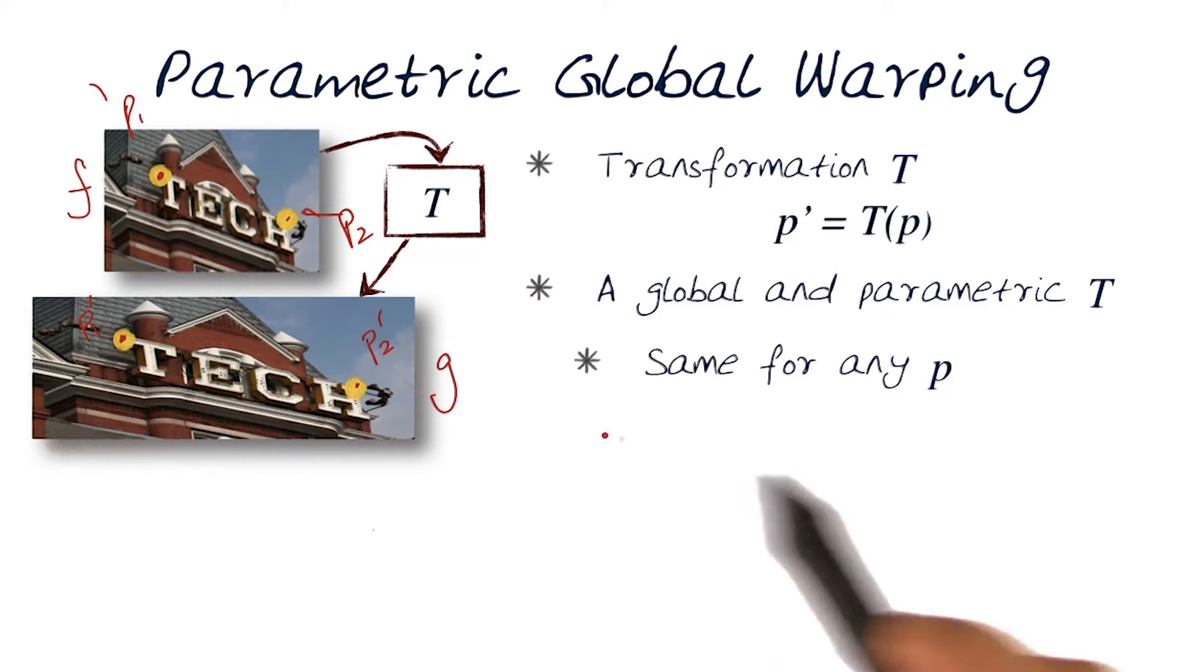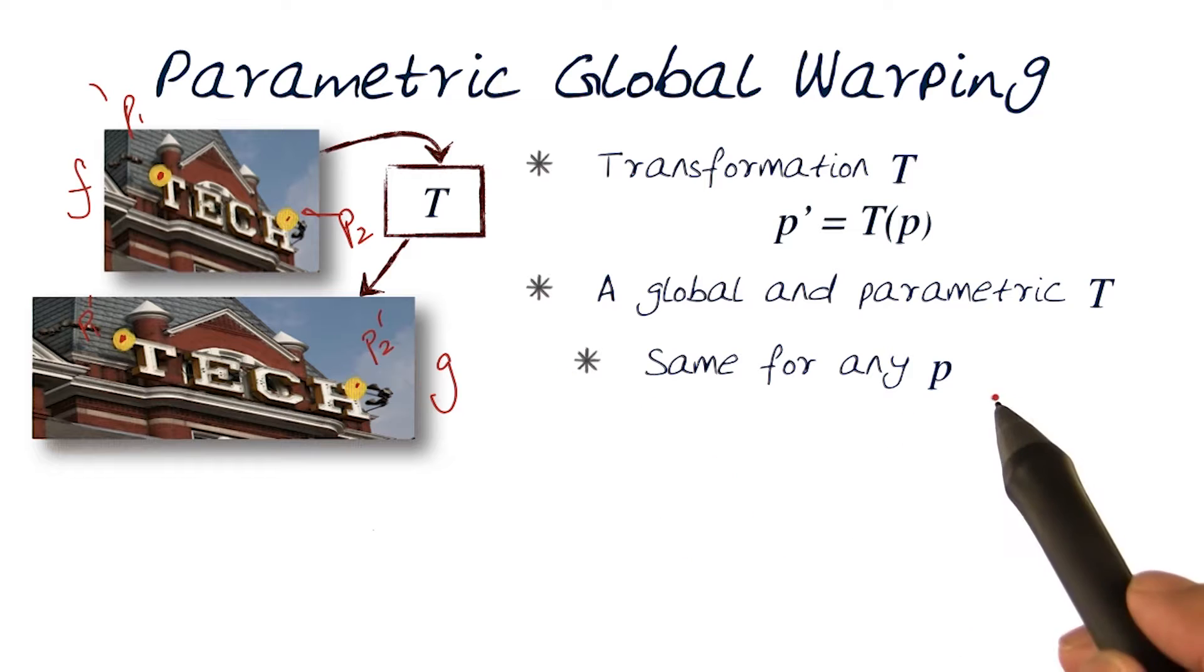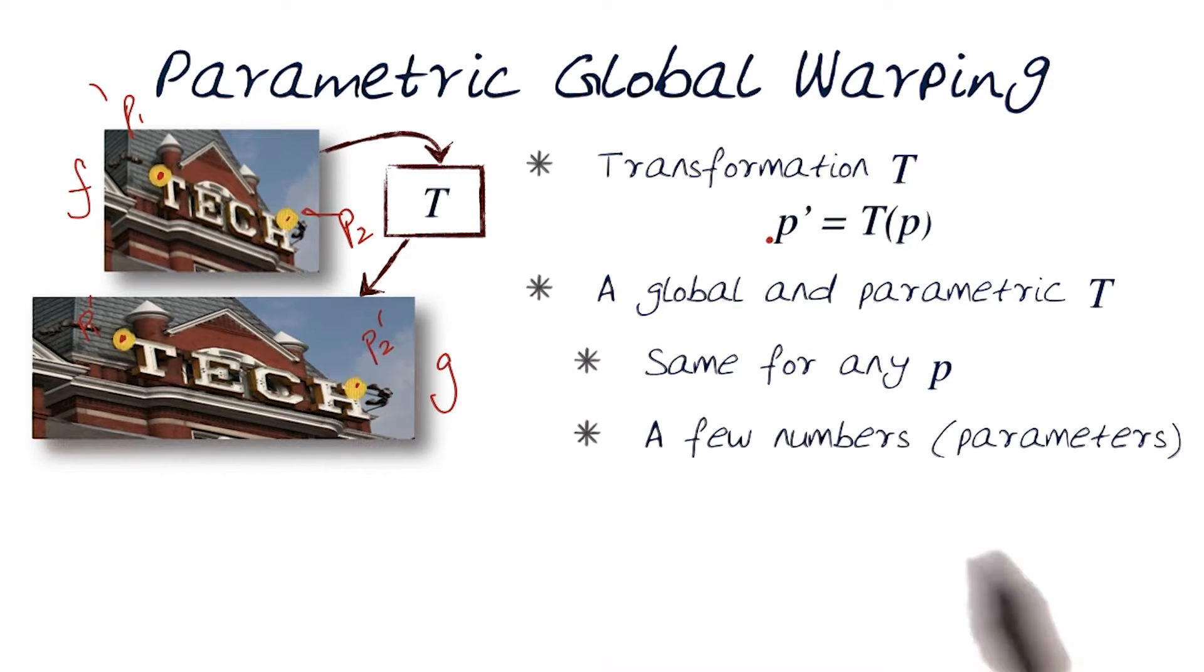In essence, we're talking about a global function that given a p, we would always get a p prime. And just to reiterate, I want to come up with a few set of simple parameters.